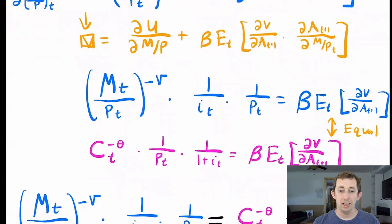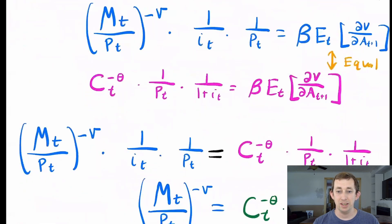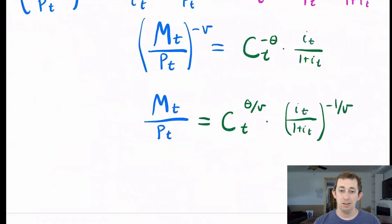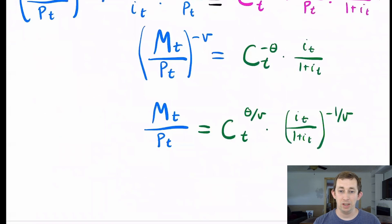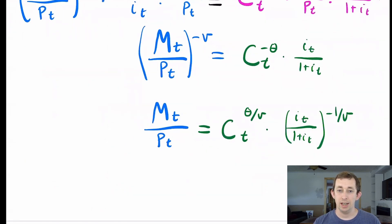I've rewritten the first order condition for consumption, and you can see that both expressions are equal to beta times the expected value of DV/DA_{t+1}. So we can set those equal to each other, do some algebra, and see that money demand today should equal, at the optimum, C_T^(θ/V) times (I_T / (1 + I_T))^(−1/V), and we are done.